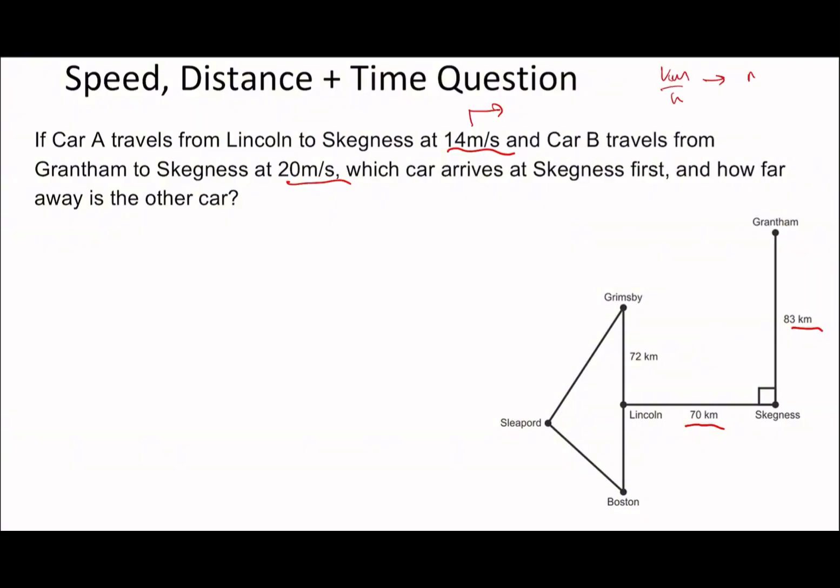This is going to be the opposite, times by 18 over 5. I'm going to convert each of these into kilometers per hour. 14 times 18 divided by 5 is 50.4 km/h, and 20 m/s times 18 over 5 is 72 km/h.